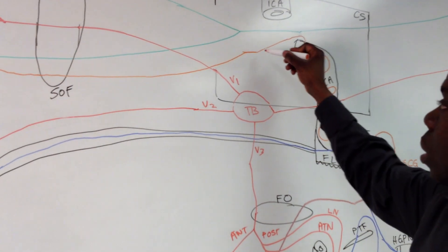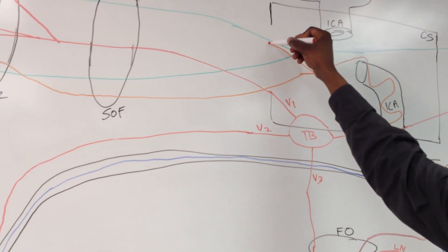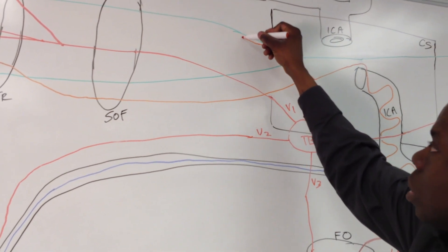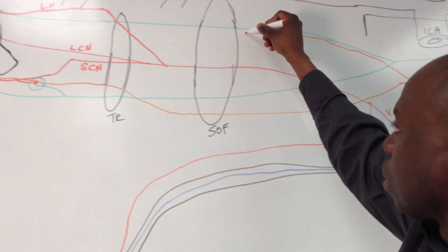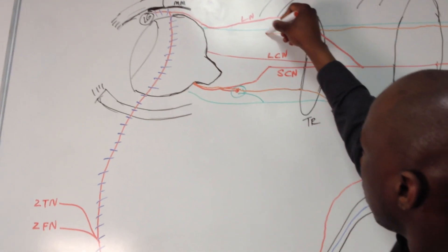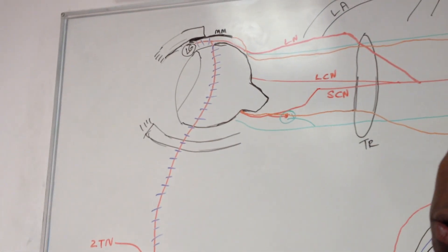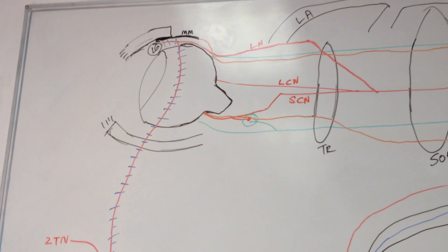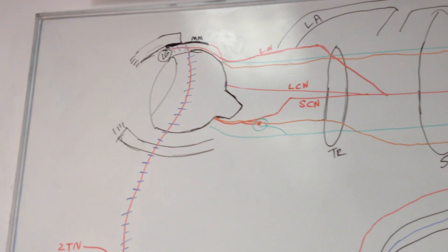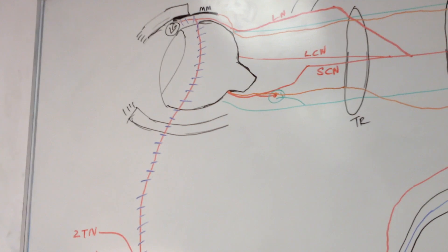Coming back, the other branch is going to go up, taking on the superior branch of the oculomotor nerve and following that all the way. Right at the end, it's going to jump off and attach onto Muller's muscle. This one is like Tesco — every little helps — it's going to pull gently on the upper lid, aiding the levator palpebrae superioris in its function.